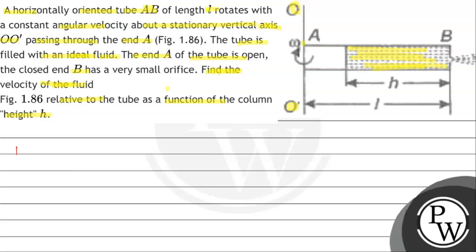Let's see the key concept. We will use Bernoulli's theory. The first thing is that this will be a radius r, so we can find the change in pressure. The change in pressure means dP/dr is equal to ρω²r.